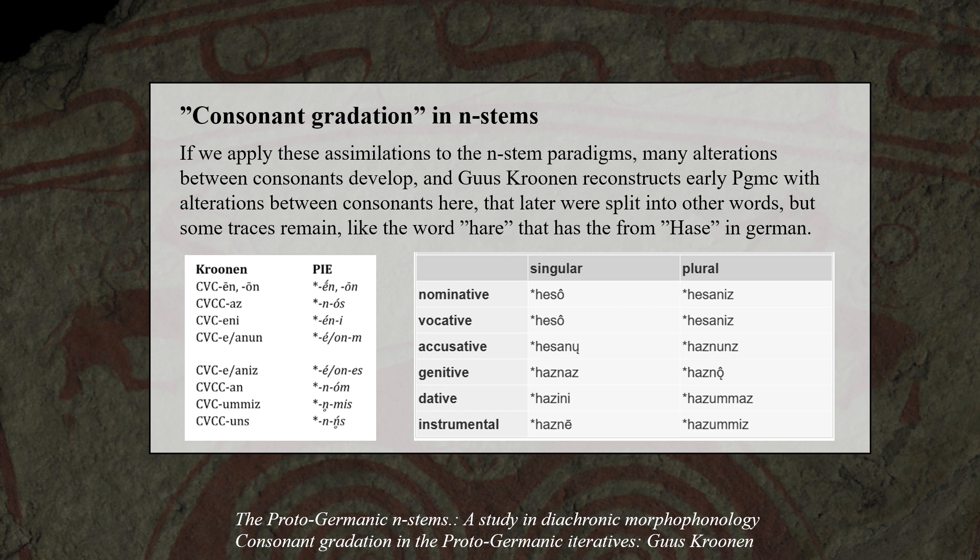Sjöskronen reconstructs early Proto-Germanic with alternations between consonants that were later split into separate words, but some traces remain, like the word 'Herr' that has the form 'Hase' in German, showing an alternation between R and S. He also reconstructs ablaut in the paradigms, as shown in the word for 'wooden beam' in Germanic.